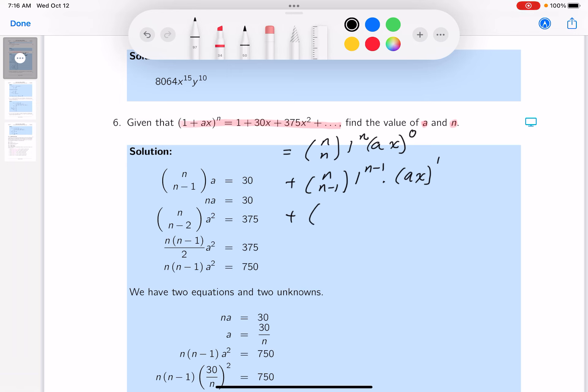Just writing the first three terms down: n choose n minus 2, 1 to the n minus 2 times ax to the second power.